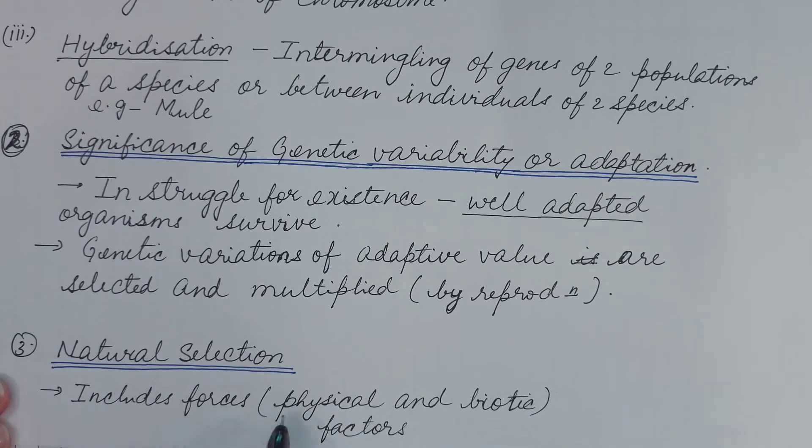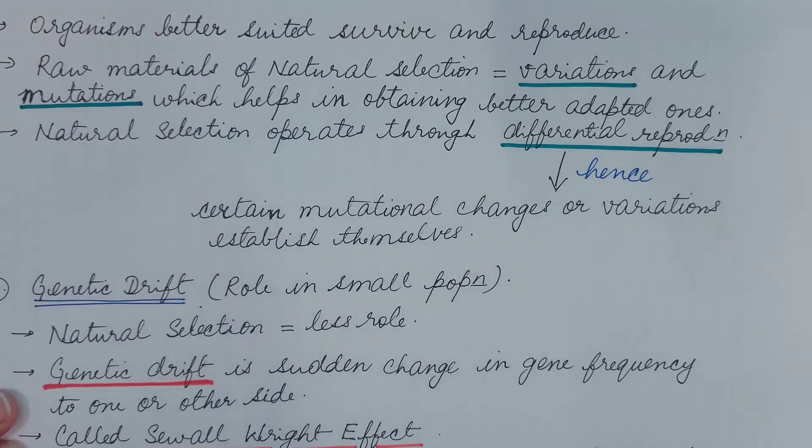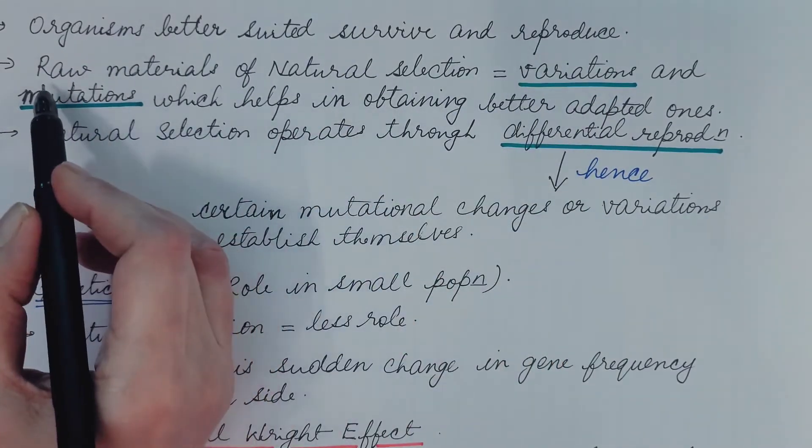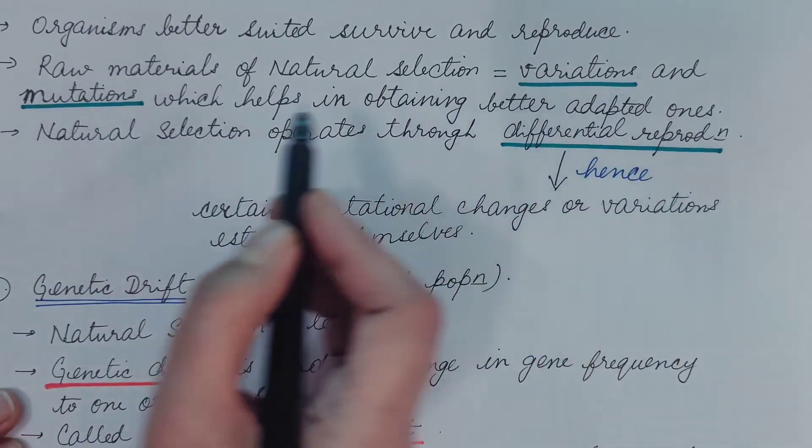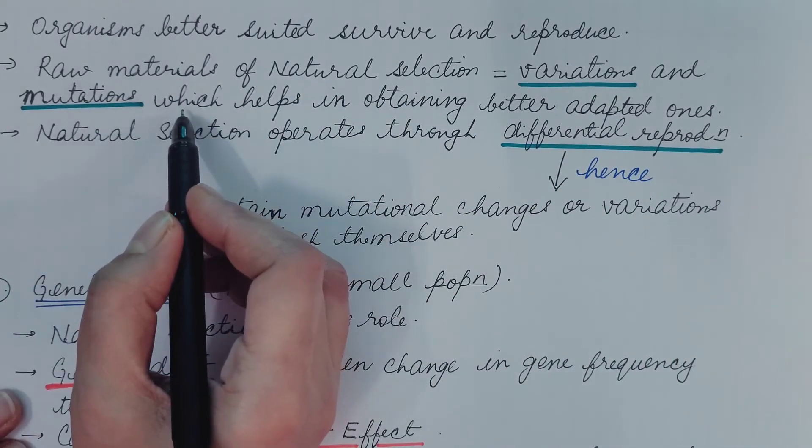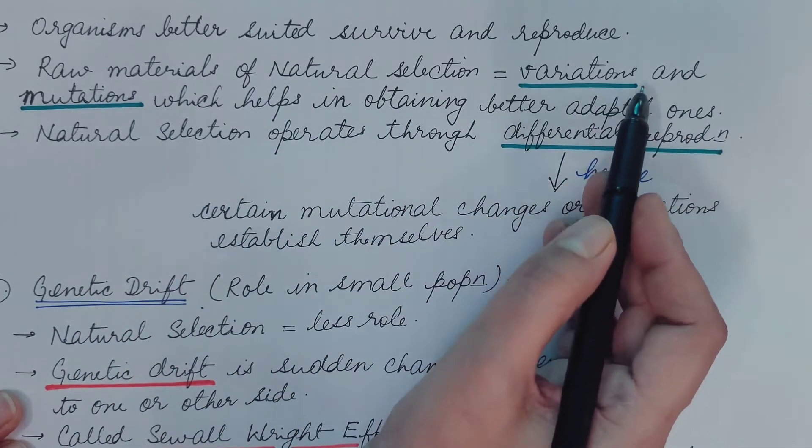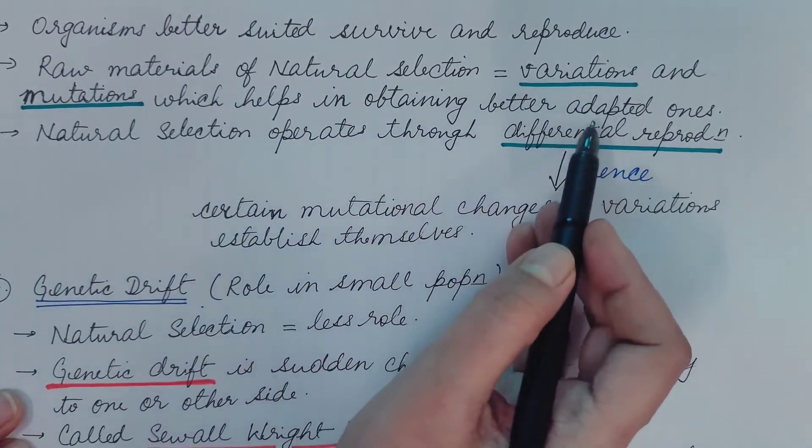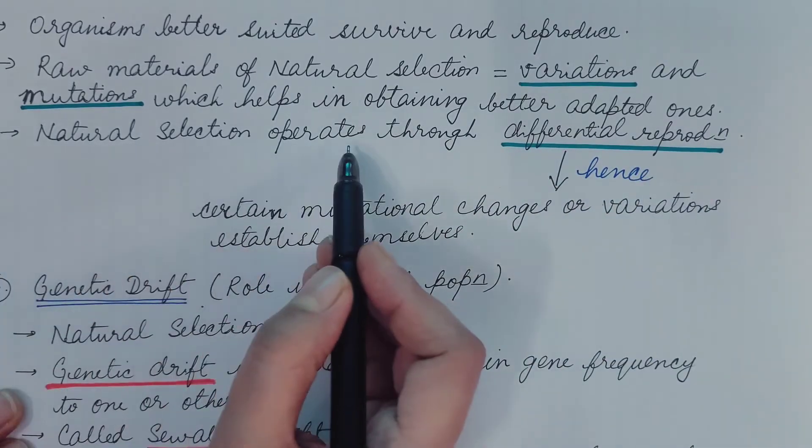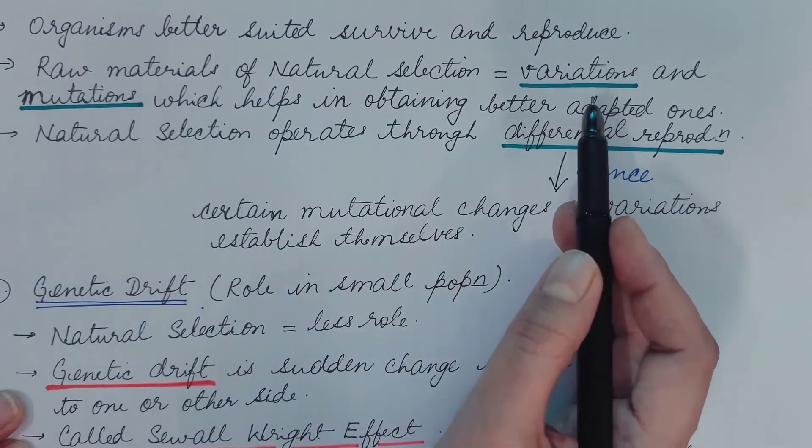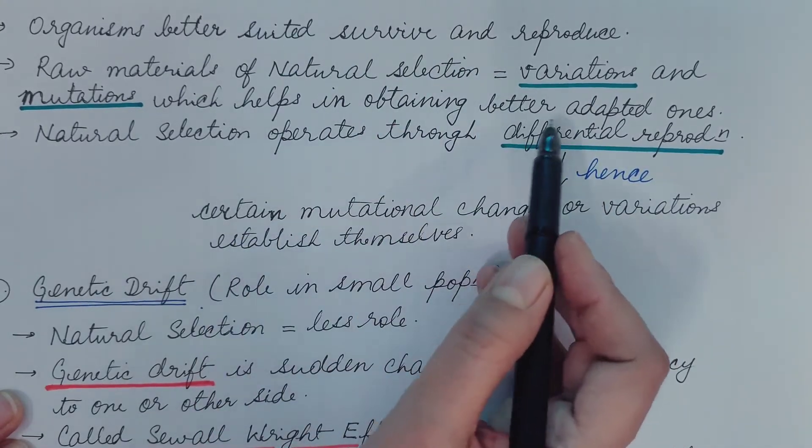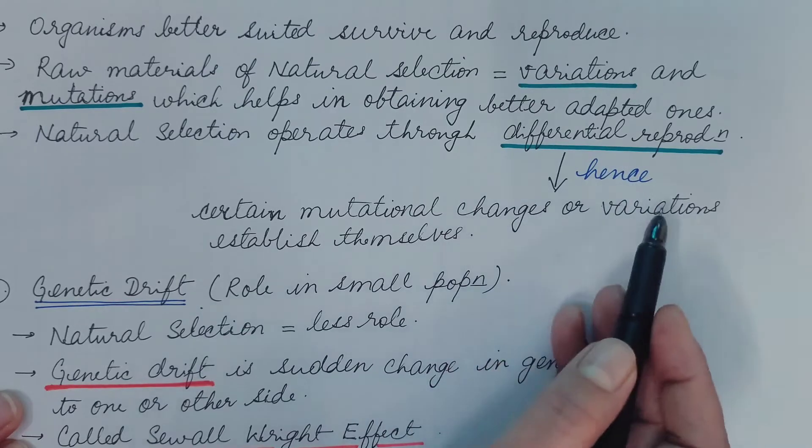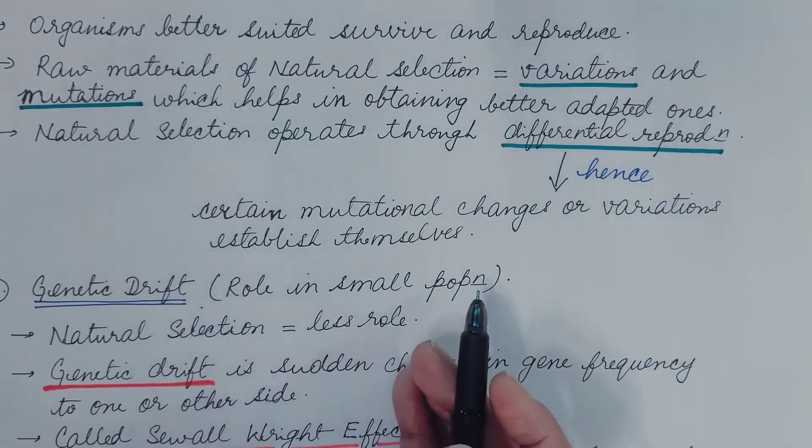And then these reproduce or multiply and produce their offspring. Third is natural selection. It includes forces, physical and biotic factors which determine the changes in the individual or the organism. Organisms better suited survive and reproduce. And the raw materials of natural selection are variations and mutations. These help in obtaining the better-adapted ones. That means individuals which have the variations and mutations which make them suitable to survive are better adapted and these are selected. Natural selection operates through differential reproduction. Because the individuals which are selected, these reproduce and produce offspring. Hence certain mutational changes or variations establish themselves.